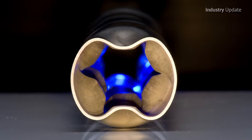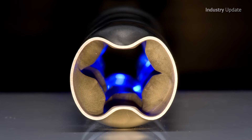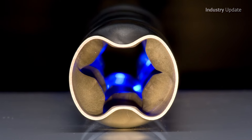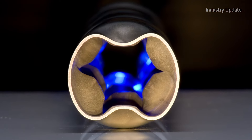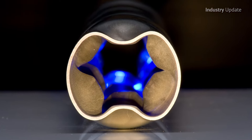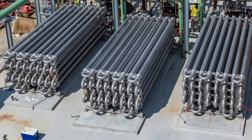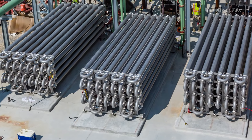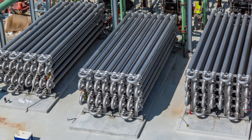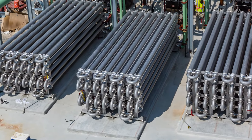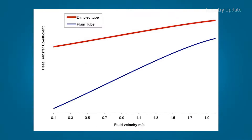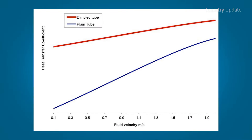By arranging dimples at the right pitch and centers, the liquid is jostled but not restricted, though there's little change in the pressure drop characteristics compared to plain, undimpled surfaces. However, there is a significant change in the heat transfer rates.